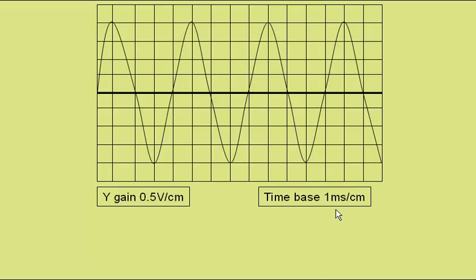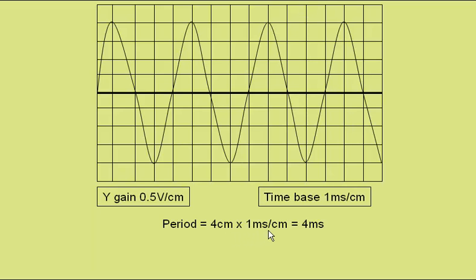Here we have a time base setting of 1 millisecond per centimetre, and this wave has a period from here to here, covering 4 centimetres. So the time period for this wave is 4 centimetres multiplied by 1 millisecond per centimetre, giving 4 milliseconds. The frequency is 1 over the time period, at 250 hertz.